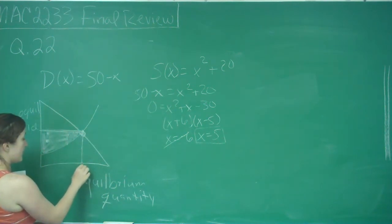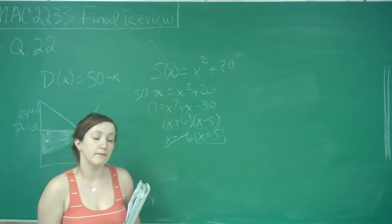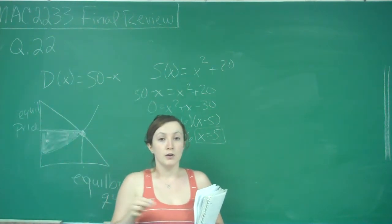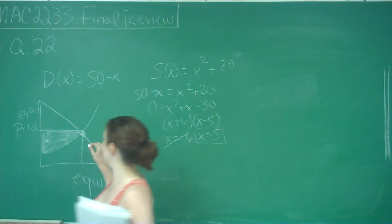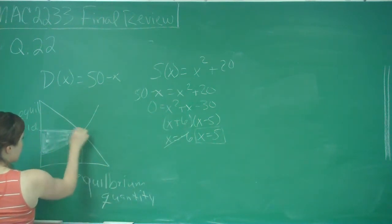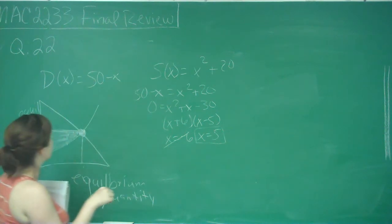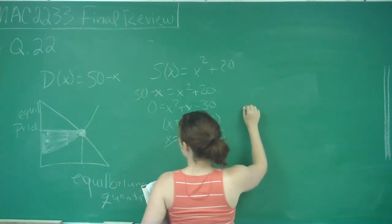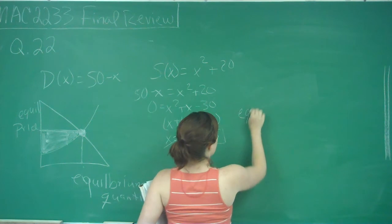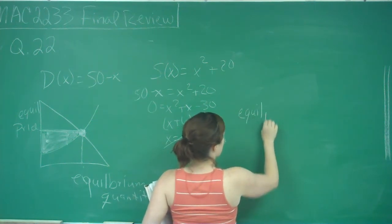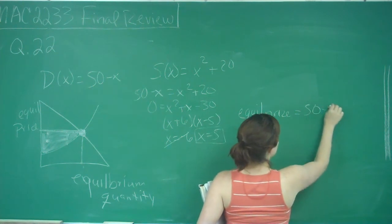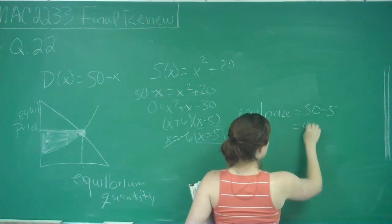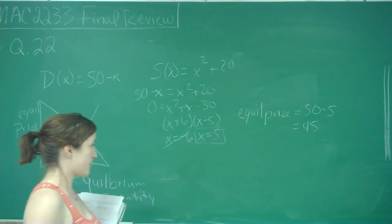So that's our value but we need to know what our equilibrium price is. And what you can do is you can actually plug in 5 to either the demand or the supply value because it will be the same y value at that quantity. So I'm just going to plug it into demand and I get that equilibrium price will be equal to 50 minus 5 which is equal to 45.